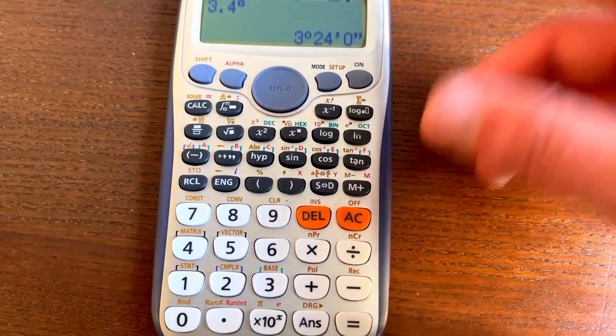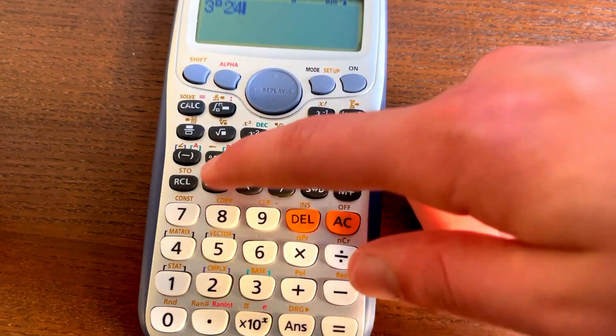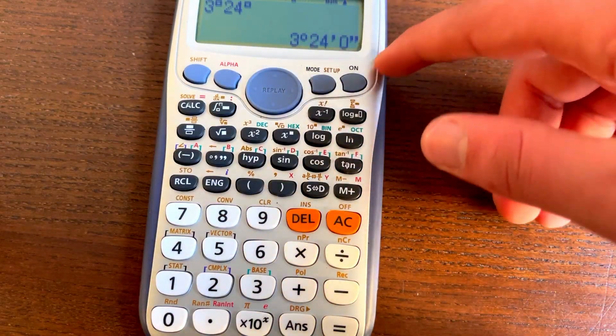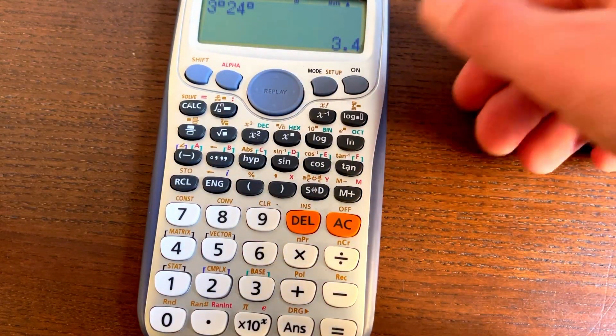I can actually do this the other way around as well. So what I can do is I can write 3, click this, and 24 and click this. I can now click equals and I get the same thing, but then if I click S to D twice, I get back to 3.4. This can be really useful.